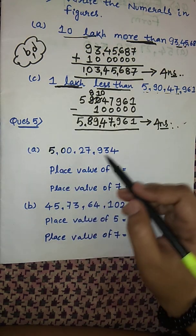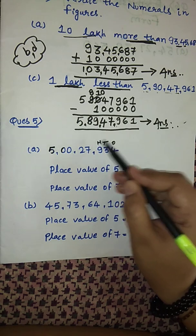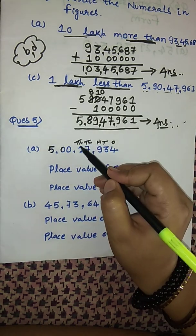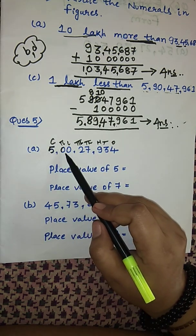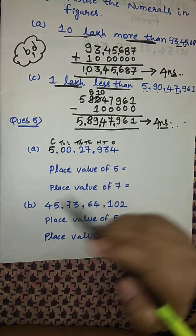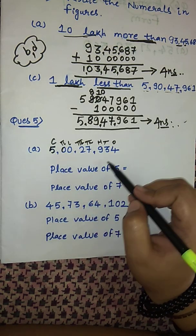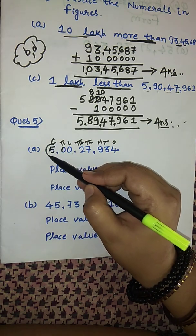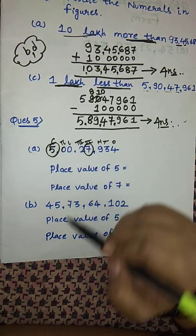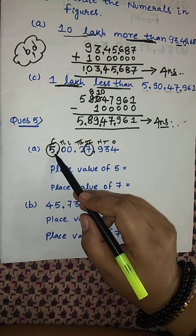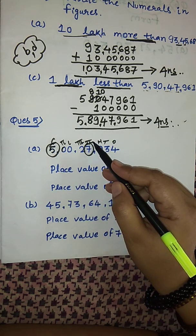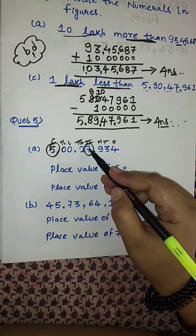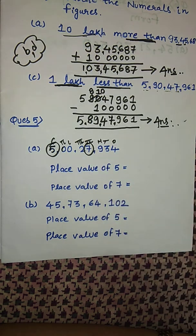Our first question has the number: 5 crores, 27 thousand, 9 hundred 34. The place value columns are: ones, tens, hundreds, thousands, ten thousands, lakhs, ten lakhs, crores. In this number, 5 is at the crores place and 7 is at the thousands place. So the place value of 5 is 5 × 1 crore = 5 crores. The place value of 7 is 7 × 1 thousand = 7 thousand.